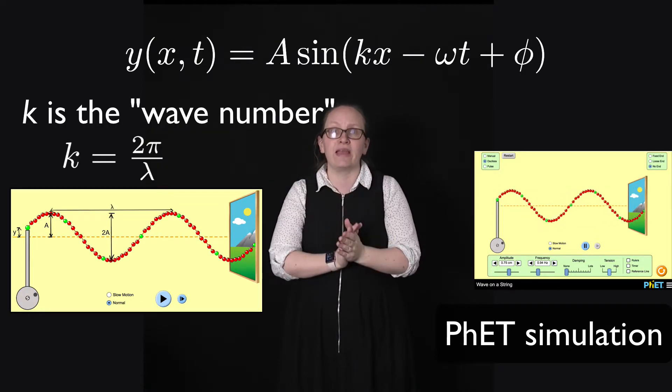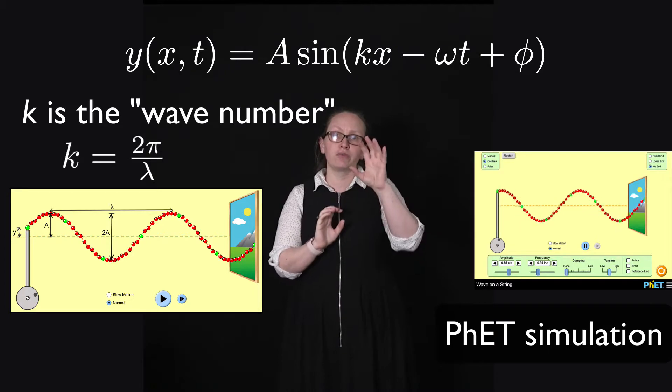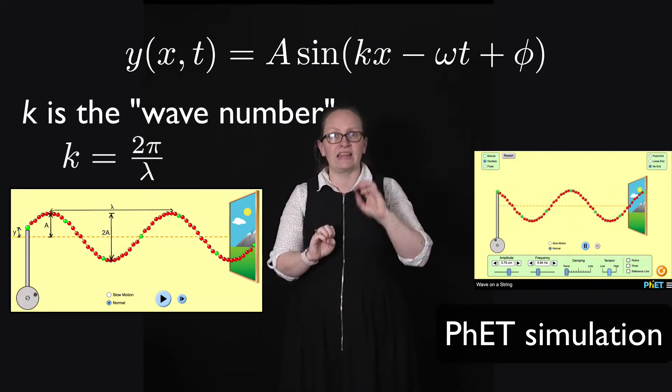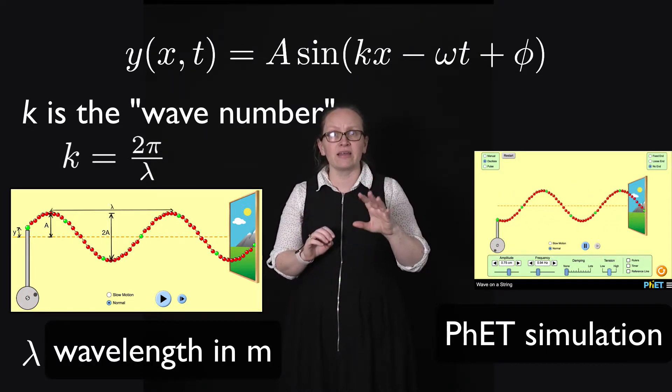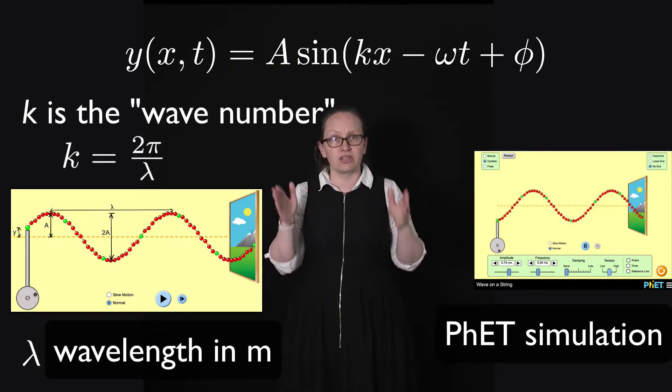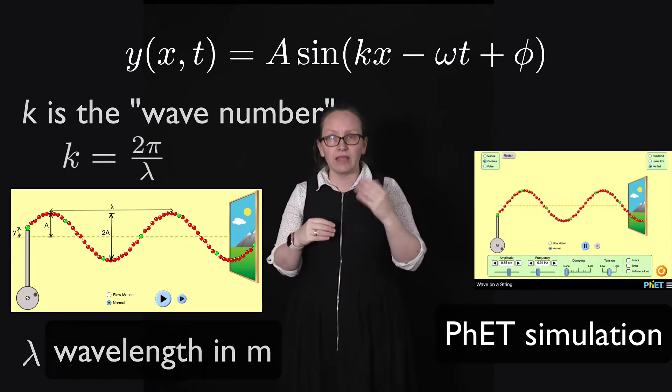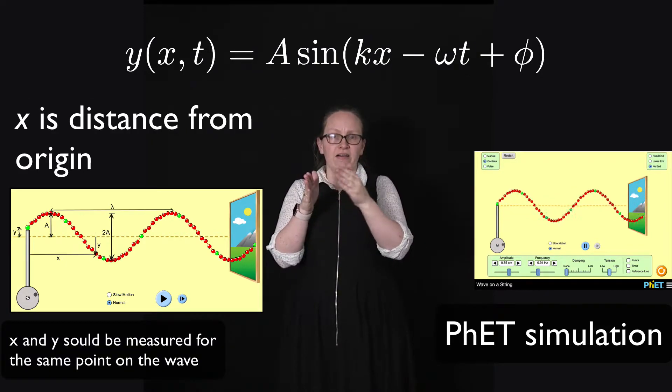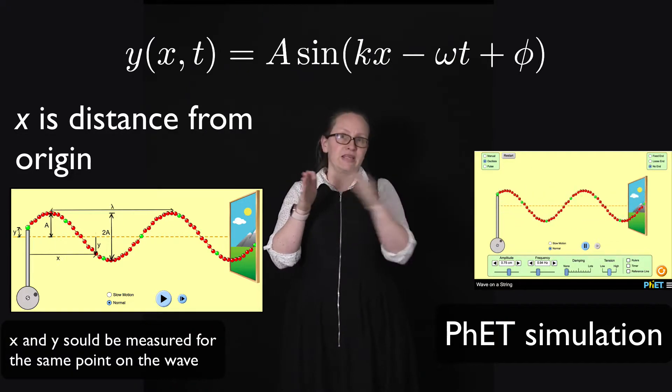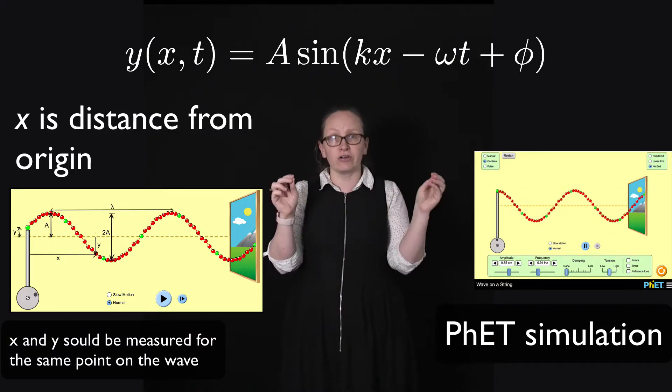k, this is the wave number. It is equal to 2 pi divided by lambda, where lambda is the wavelength measured in meters. x, that tells us how far along our medium we are from the origin.